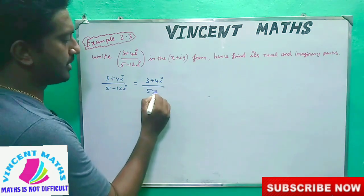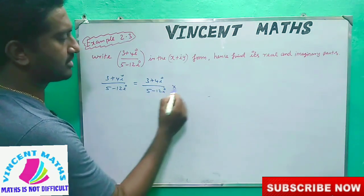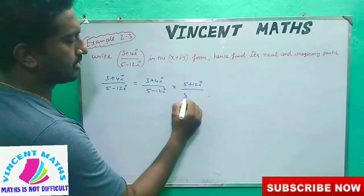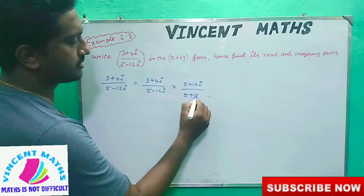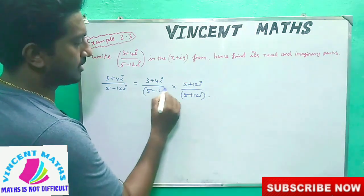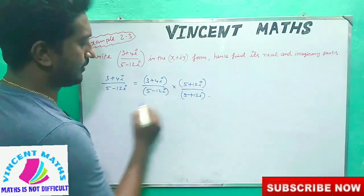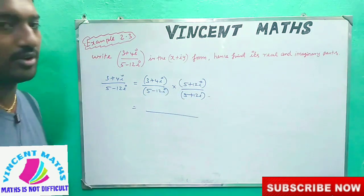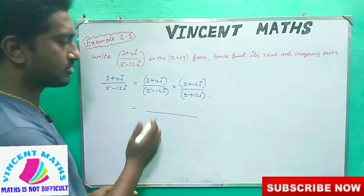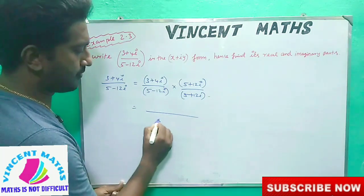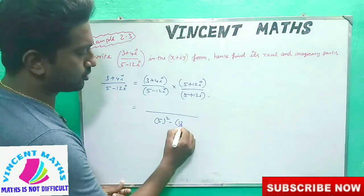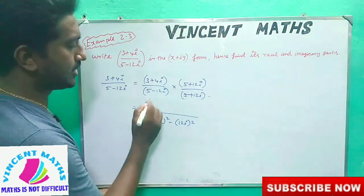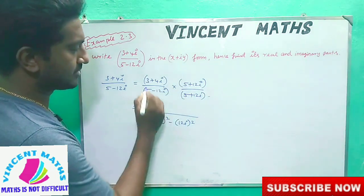We multiply by the conjugate: (3 + 4i) divided by (5 - 12i), multiplied by (5 + 12i) over (5 + 12i). Using the formula (a + b)(a - b) = a squared minus b squared, the denominator becomes 5 squared minus (12i) whole squared. The numerator expansion begins: 15 plus 36i plus...